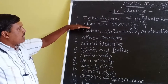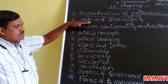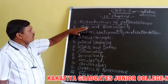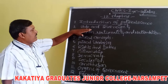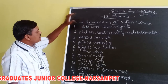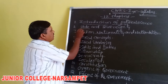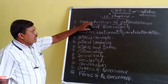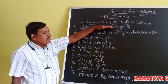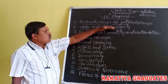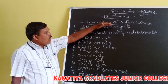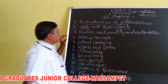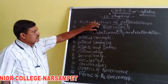The second chapter is State and Sovereignty. Here we will learn what is meant by the state, the origin of the state, and the elements of the state — such as people and territory — as the state has five elements. We will also learn what sovereignty means, how many kinds of sovereignty there are, and how a state acquires its sovereignty.